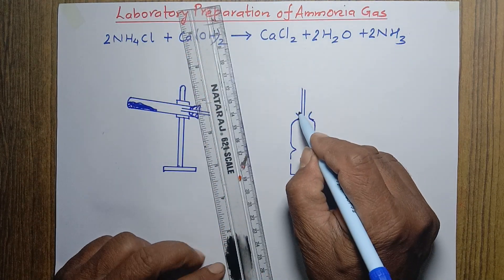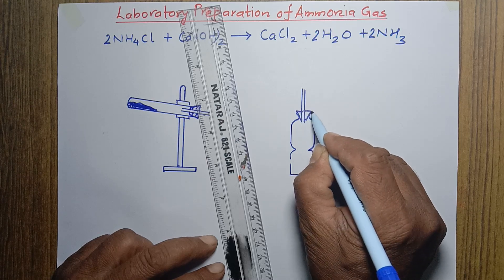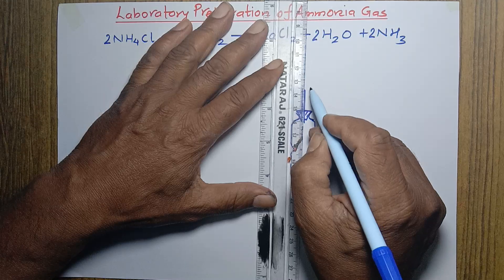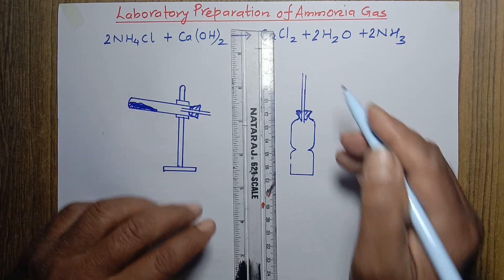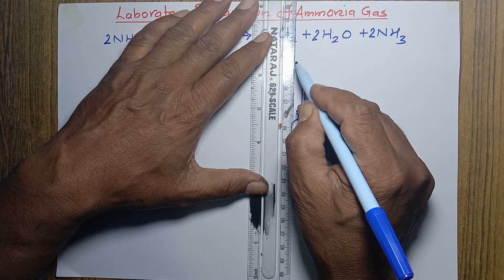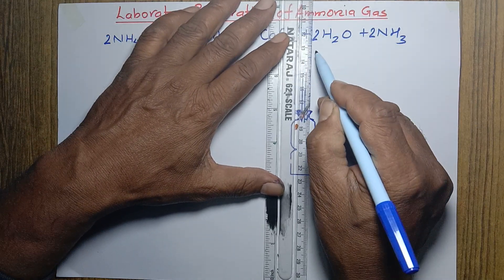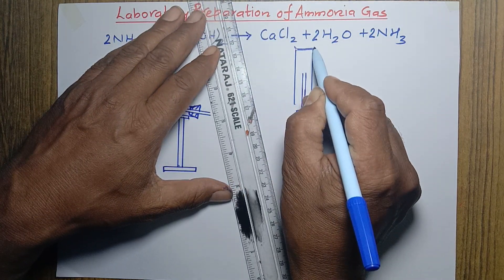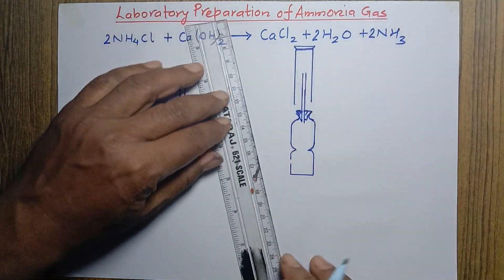The delivery tube is fixed at the mouth of the lime tower with the help of a cork. This is the delivery tube. To collect the ammonia gas, we are using a gas jar here.